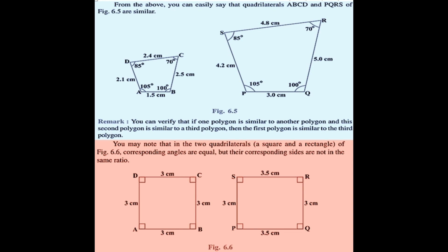If one polygon is similar to another polygon and the second polygon is similar to a third polygon, then the first is similar to the third. You may also note that a square and a rectangle: corresponding angles are equal but their corresponding sides are not in the same ratio. So they are not similar - even though all angles are equal in both rectangles, the sides are not proportional, so they are not similar.